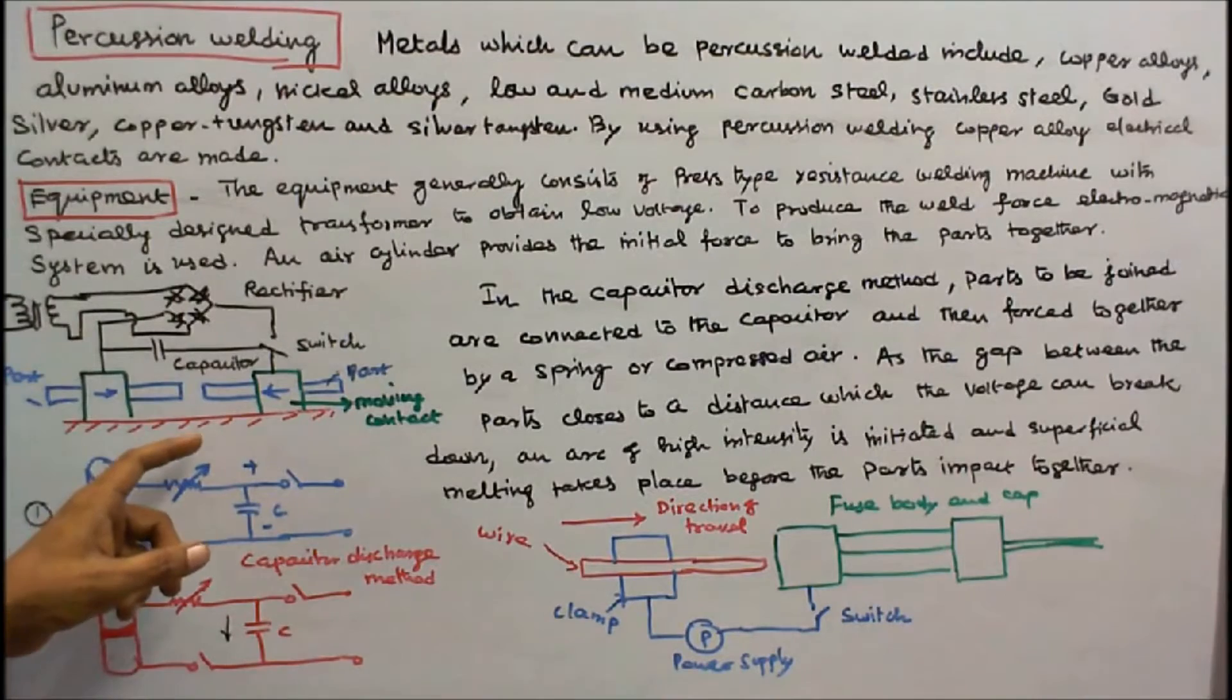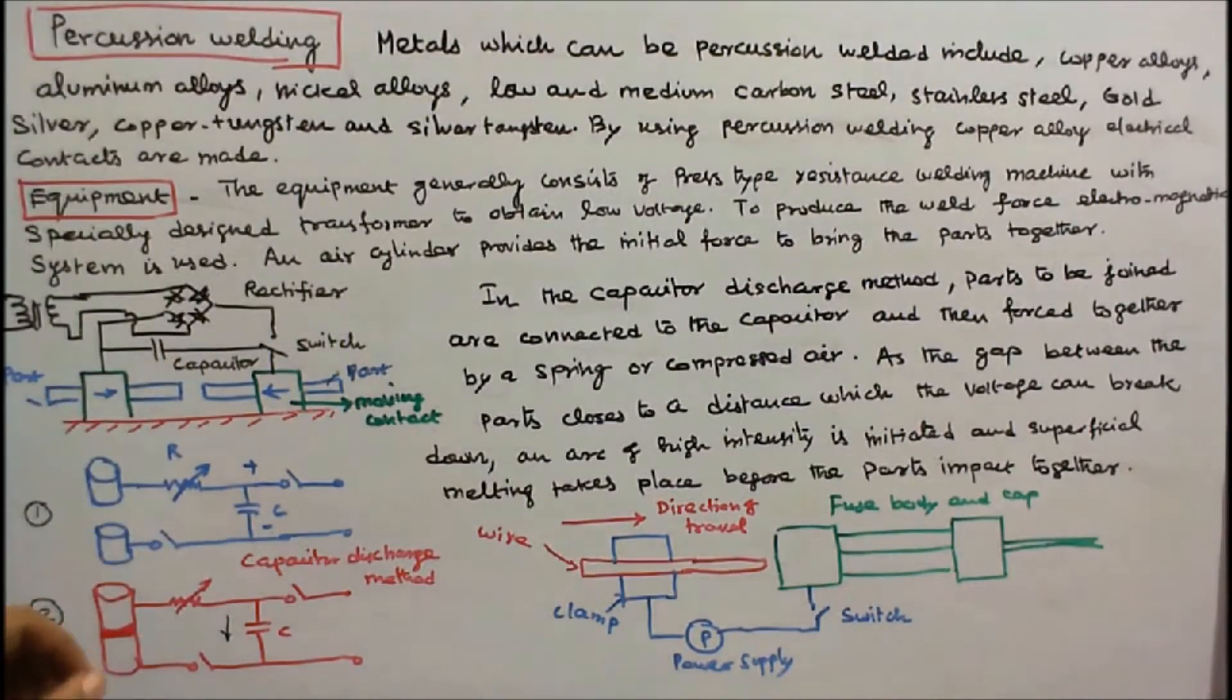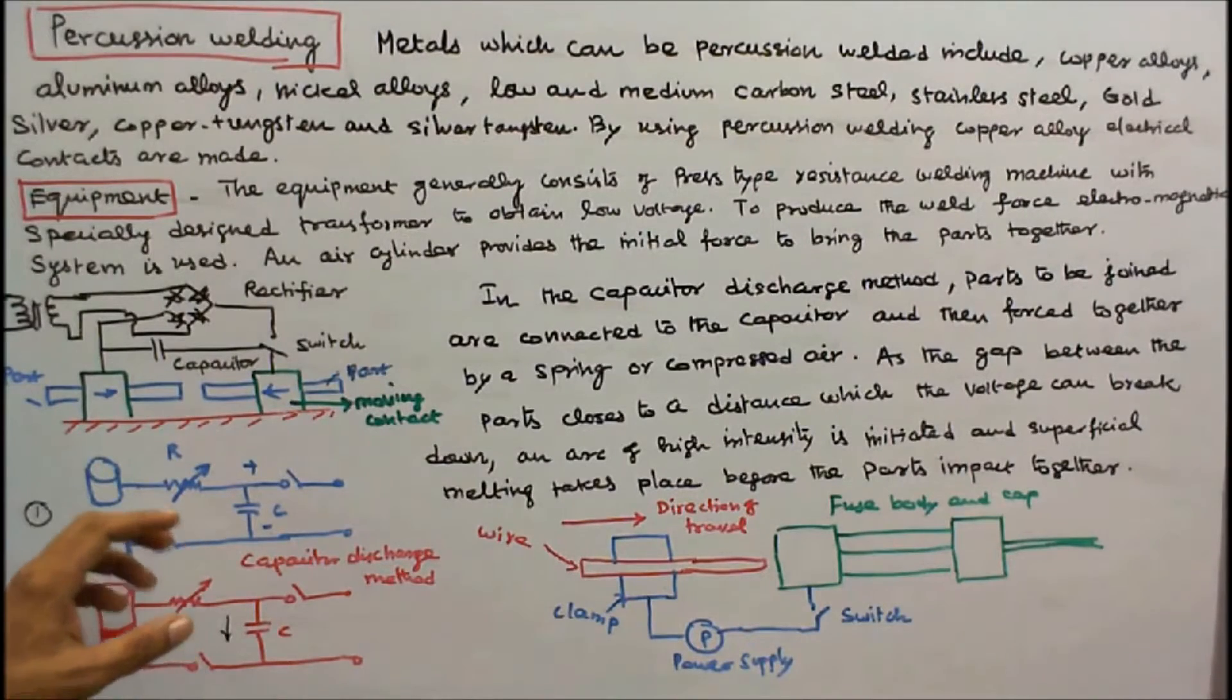An air cylinder provides the initial force to bring the parts together. In capacitor discharge method, parts to be joined are connected to the capacitor and then forced together by a spring or compressed air. As the gap between the parts closes to a distance which the voltage can break down, an arc of high intensity is initiated and superficial melting takes place before the parts impact together.